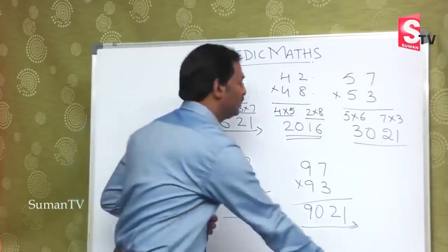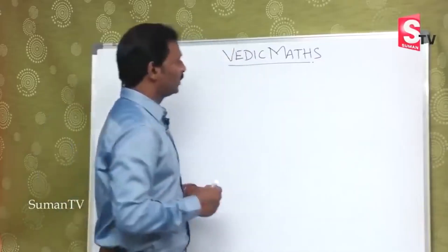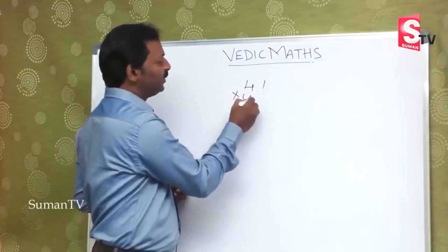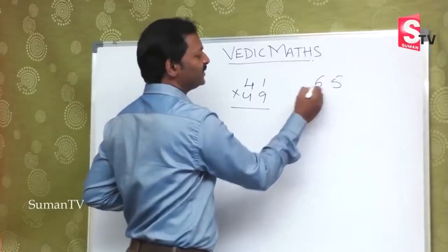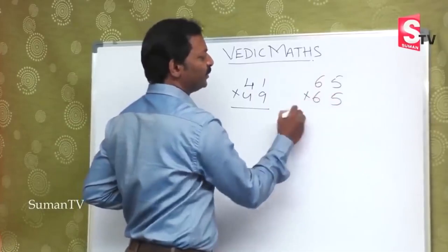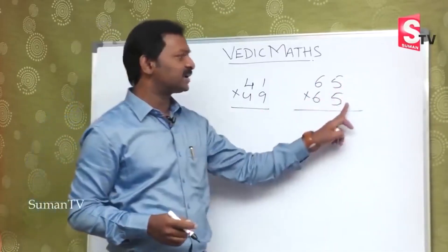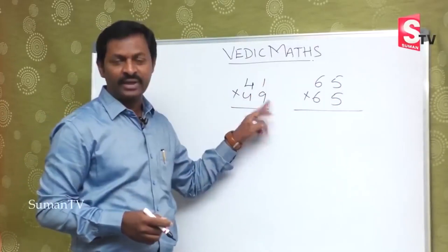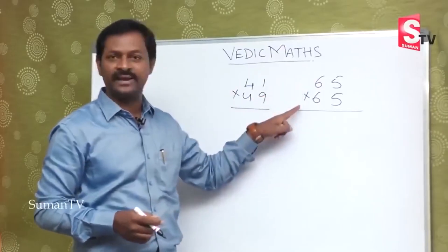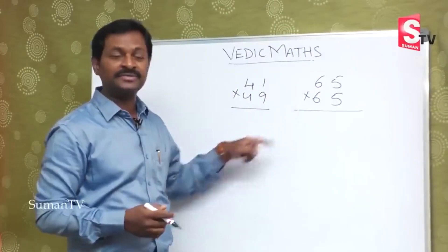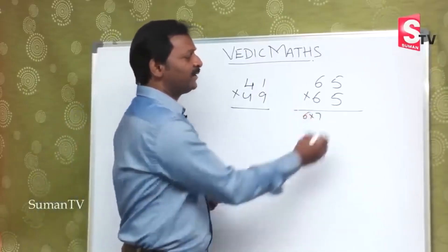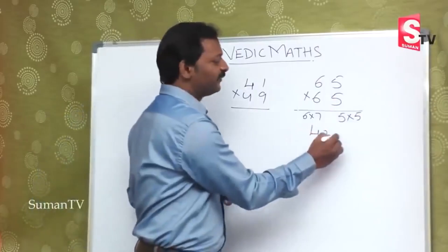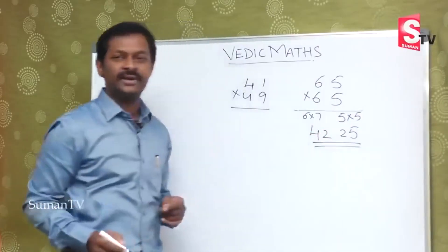We will see one more example. Suppose if you get a number, 41 is multiplied by 49, or 65 is multiplied by 65. Units placed here, 5 and 5 makes 10, right. And like 1 and 9 also 10. And here 1 and 9 also 10. And you need to look at tens digit, 6 and 6. 6 into 7, and here 5 into 5. So 6, 7 is 42, and 5, 5 is 25. This is the right answer.